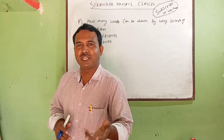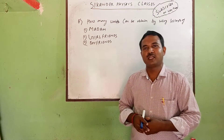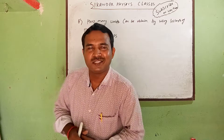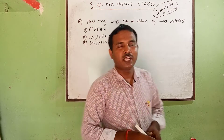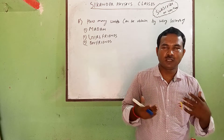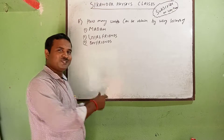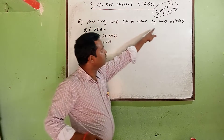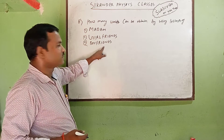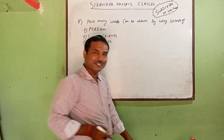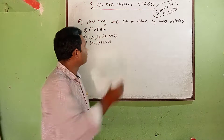There are some tricks that we can find out, and mostly you have seen in general competitions — questions where you find out how many words can you obtain using letters. For example: madam, girlfriends, or boyfriend. How will you find out? Suppose you have the word 'madam'.